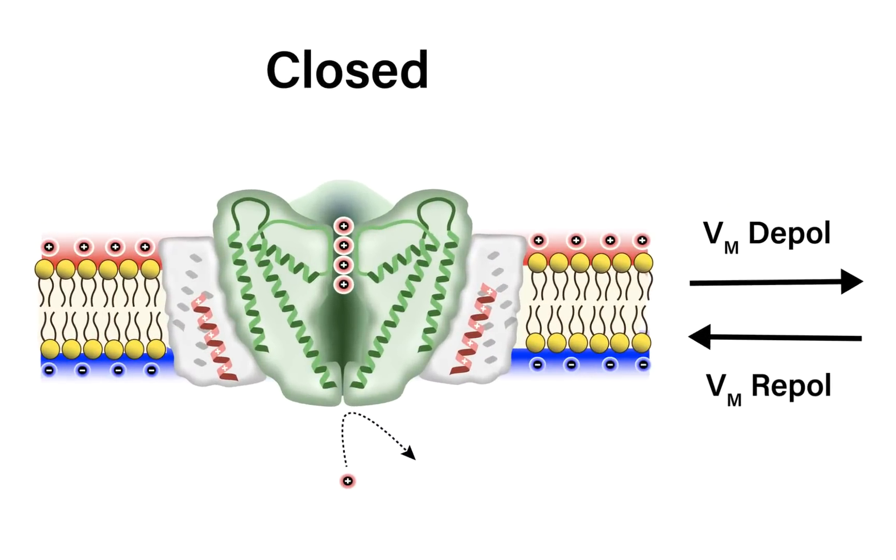The potassium channels are in the closed state when the membrane potential is relatively negative. This pulls those voltage sensors, the positively charged voltage sensors, out in the voltage sensor domain inward towards the inner leaf of the lipid bilayer. This causes the voltage gate to be in the closed position, which occludes movement of potassium down its electrochemical gradient, typically from inside the cell to outside the cell.